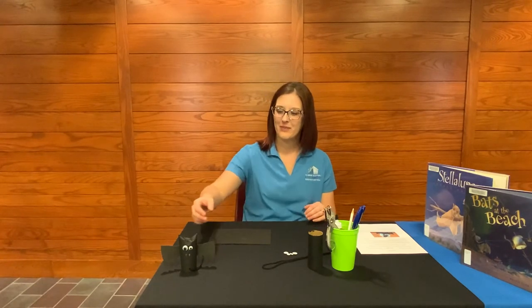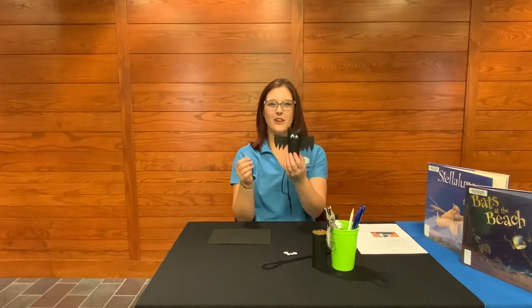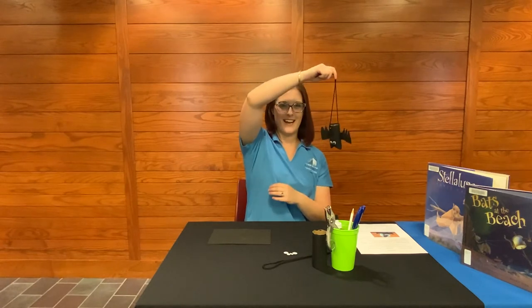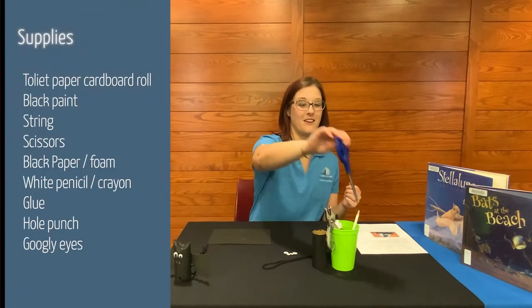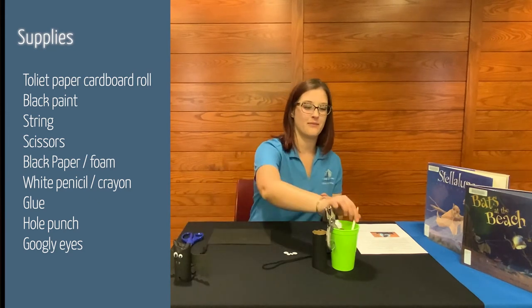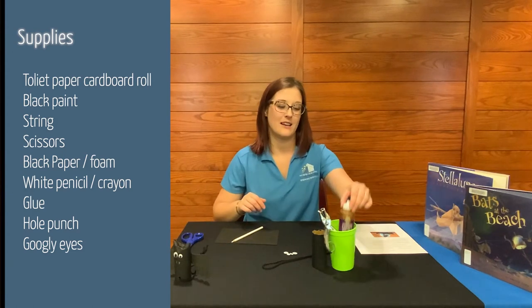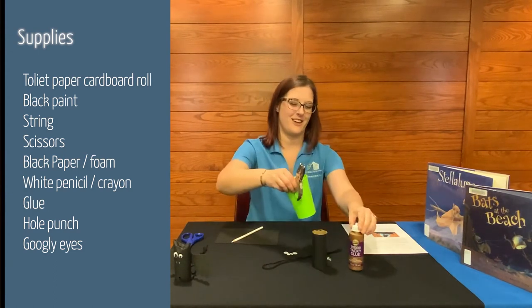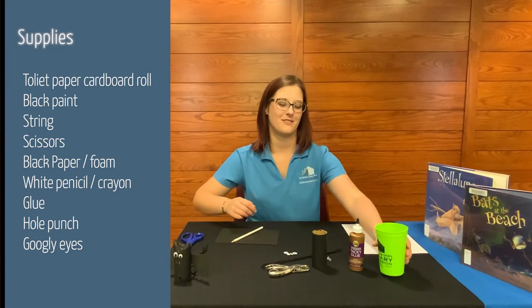So we learned all about bats today. And this is just an easy craft you can do at home. There are so many things you can use at home that you don't have to pay for, like toilet paper rolls. So today we're going to make a toilet paper roll bat. And just like Stellaluna, bats don't sleep like this — they sleep upside down. So we're going to have our bats sleep upside down too. Here's what you'll need: a pair of scissors — if you're a kid, make sure to use safety scissors or ask an adult. A white crayon or white pencil to trace your wings on black paper or black foam. Some glue — I like tacky glue. And a single hole punch to punch a hole in the bottom of your bat if you plan on hanging him upside down.